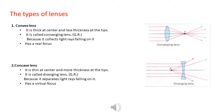Types of lenses: we have two types of lenses — convex lens and concave lens. As you see in the picture, a convex lens is thick at the center and less thick at the tips. It is called a converging lens because it collects light rays falling on it and has a real focus.